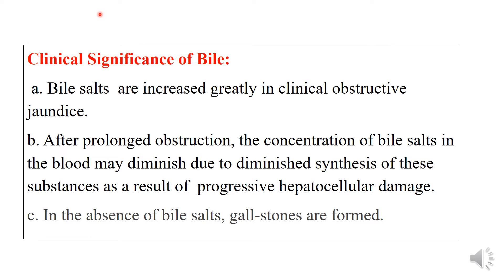The clinical significance of bile: bile salts are increased greatly in obstructive jaundice. After prolonged obstruction, the concentration of bile salts in the blood may diminish due to diminished synthesis as a result of progressive hepatocellular damage. In the absence of bile salts, gallstones are formed.